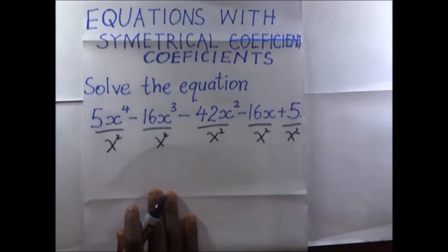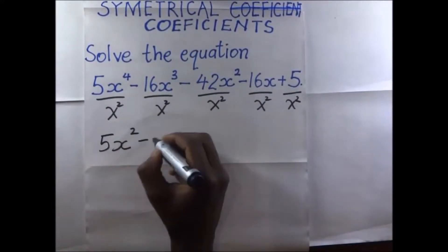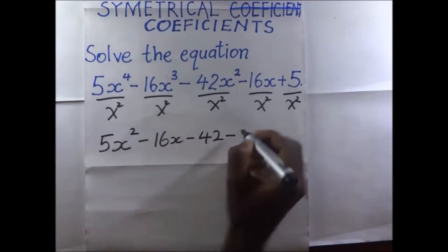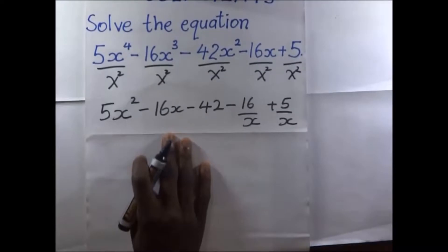When we divide through by x squared, the equation will become... So we collect like terms.